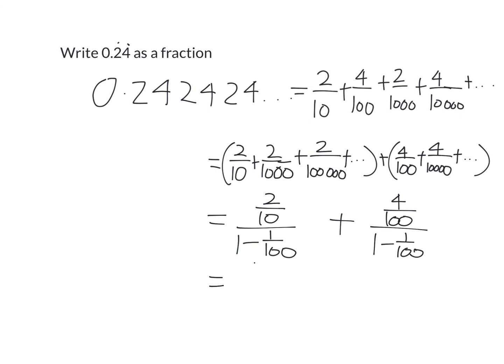Making this easier to work with, this is just 2 over 10 over 99 over 100, and then this is just 4 over 100 divided by 99 over 100. So what we actually get is 20 over 99 plus 4 over 99, which is equal to 24 over 99, and you can simplify that to 8 over 33. So 0.24 recurring is 8 over 33. We figured it out using sum of limiting GP by putting all the 2s together to form one limiting GP, and all the 4s together to form another limiting GP.